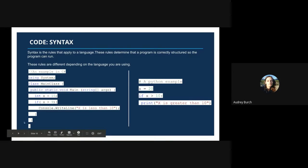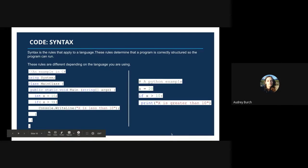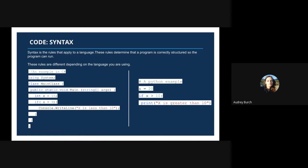Now let's look at the Python example. Python is doing the exact same thing as the C# program, except it's doing it in three lines of code, where in C# it would take quite a few more lines. Python is a great example of a very high-level programming language. C# is still a high-level programming language, but it's not as high-level as Python.